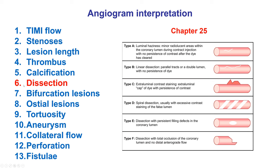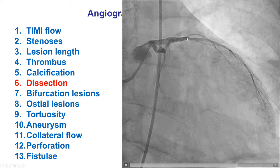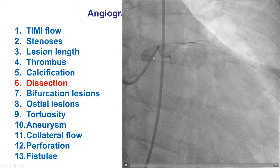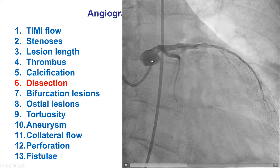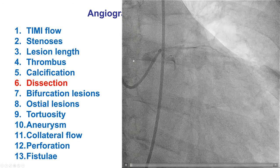Moving on, coronary arteries can have dissections that are either spontaneous or iatrogenic. There is the NHLBI classification of dissection severity, ranging from small luminal haziness to a linear dissection to complete occlusion of the vessel. This is an example of dissection in the LAD and circumflex, as well as aortocoronary dissection going backwards. This is why the pressure waveform should be assessed very carefully before injecting contrast, because injection against a dampened waveform can lead to coronary dissection.